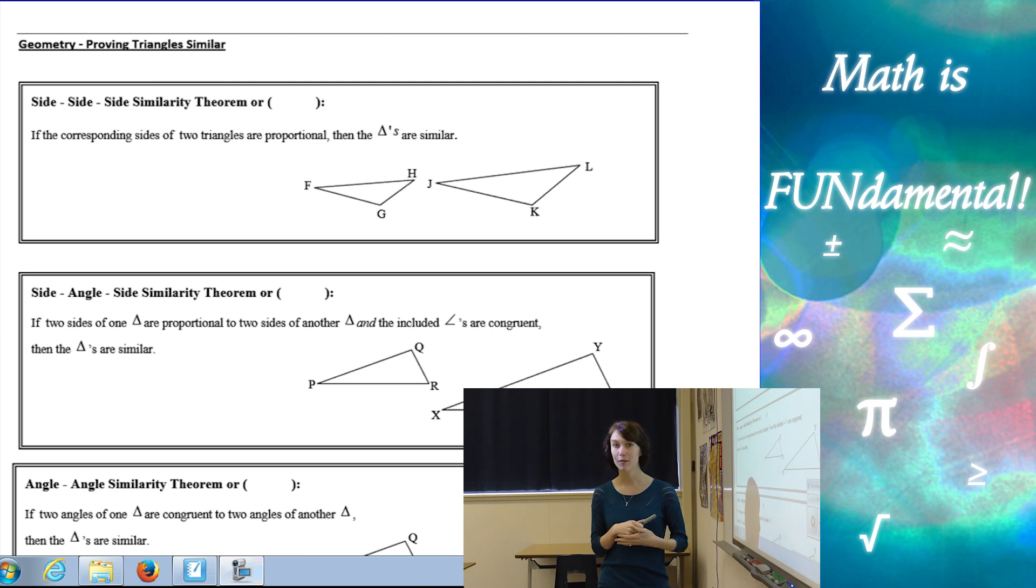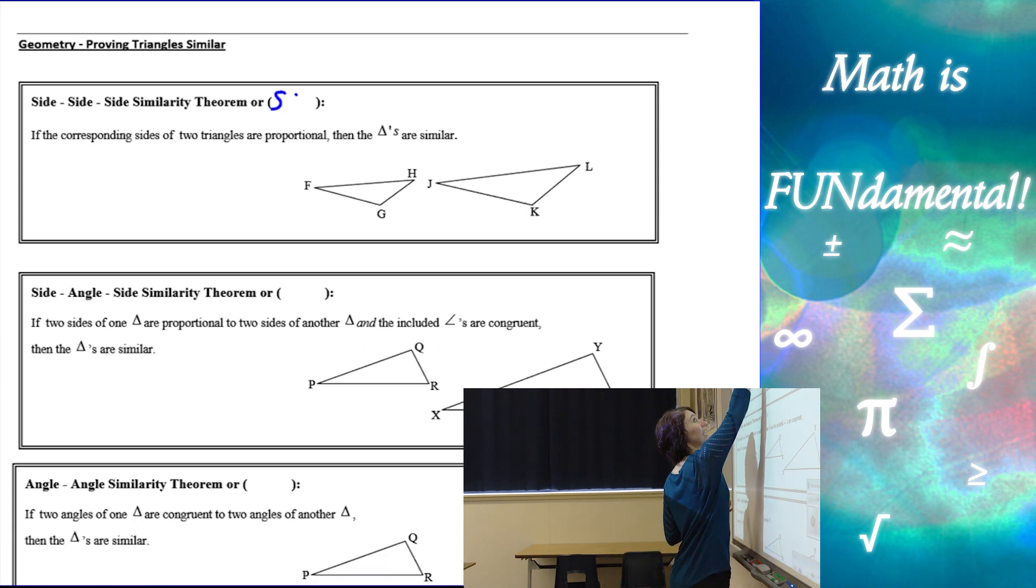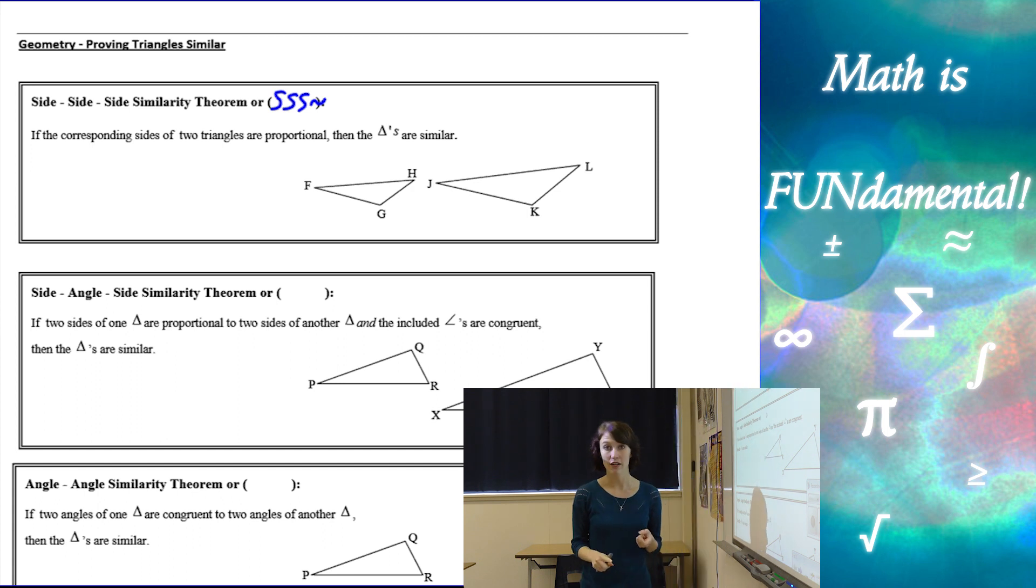The first similarity theorem we have for two triangles is called the side-side-side theorem or SSS with a squiggly for similarity. Be really careful because we learned a while ago that we have a side-side-side congruence theorem for proving the triangles are congruent and there is a difference. So we want to make sure we're saying that they're different by using a different symbol.